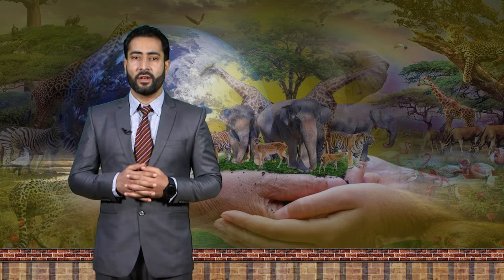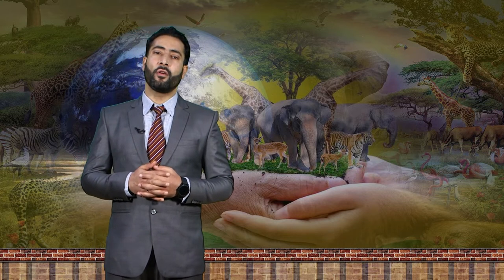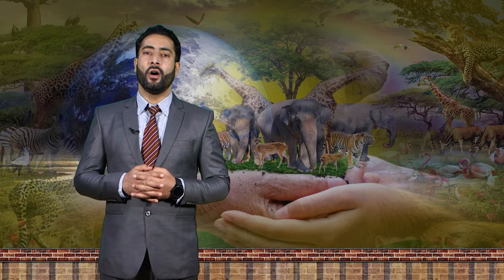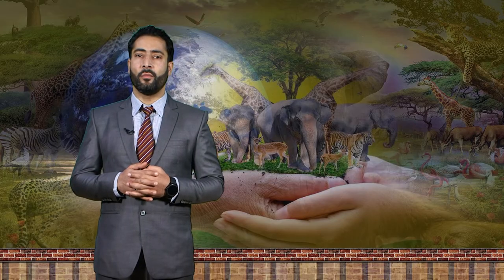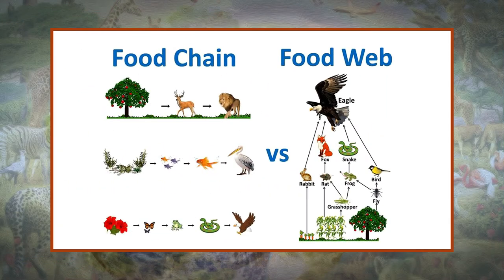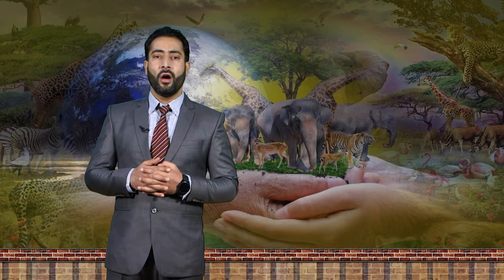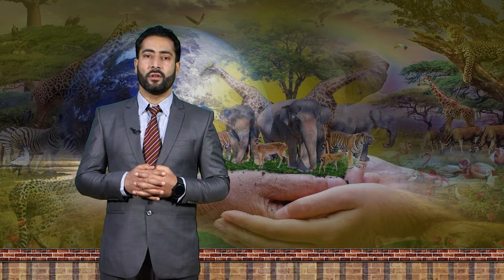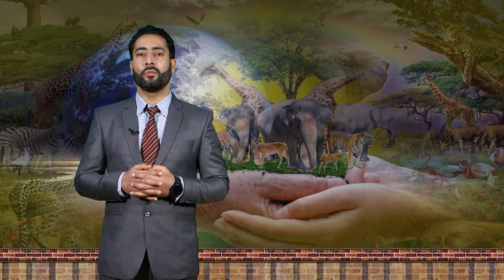It is important to understand how organisms acquire energy and how that energy is passed from one organism to another through food webs and their constituent food chains. Food webs illustrate how energy flows directionally through ecosystems, including how efficiently organisms acquire it, use it, and how much remains for use by other organisms of the food web.